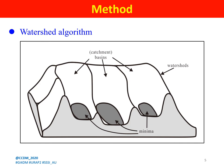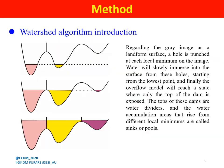The second part is the method. This is a schematic diagram of the watershed algorithm. Regarding the gray image as a landform surface, a hole is punched at each local minimum on the image. We can see water will slowly immerse into the surface from these holes, starting from the lowest point. Finally, the overflow model will reach a state where only the tops of ridges are exposed. The tops of these ridges are water dividers, and the water accumulation regions that rise from different local minima are called catchment basins or pools.